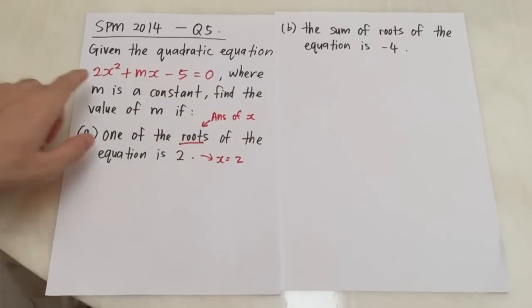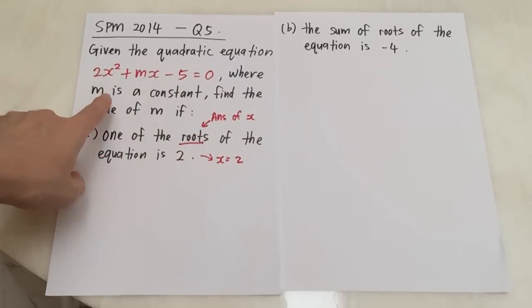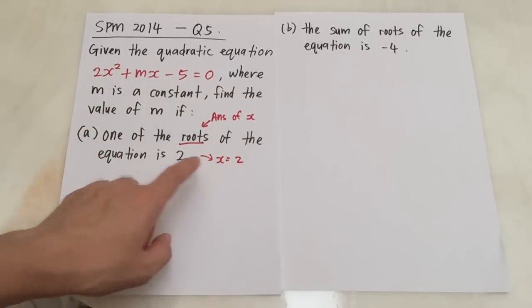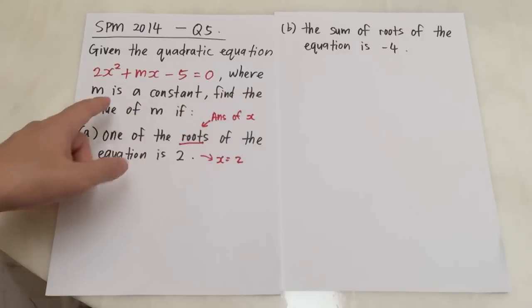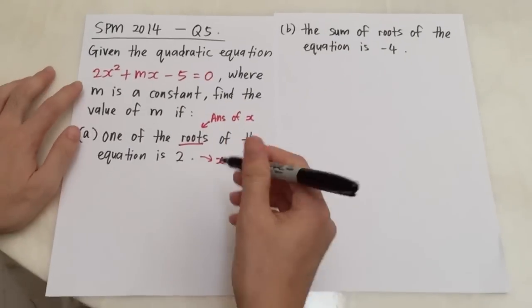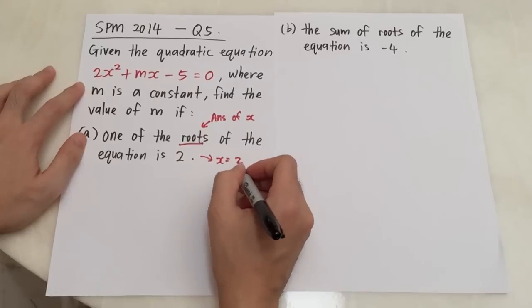This is what the question is trying to tell me. One of the answers of x is 2. So that means this is a quadratic equation. You know you have two answers for x. One of them is 2. The other one you do not know. Then he asks you to find the values of m.